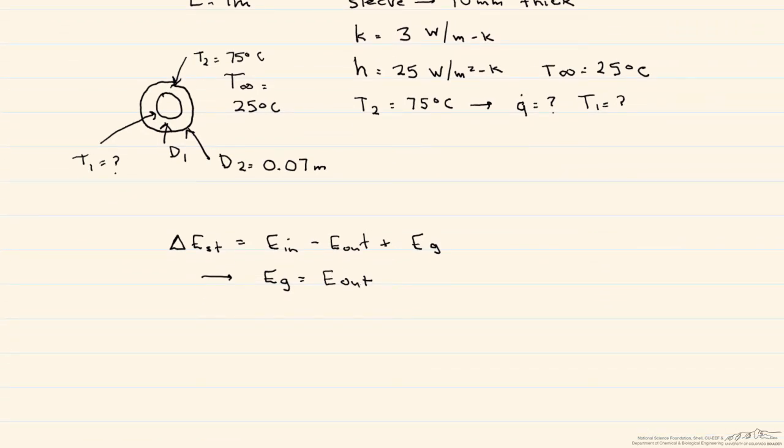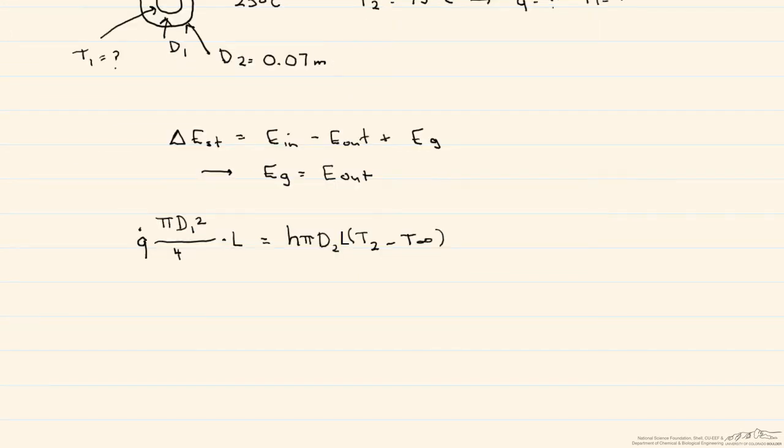And what's our generation? So our generation is equal to our Q-dot, which is that generation term. Remember it's a volumetric term, which means it's per volume, or per meters cubed. So we have to multiply it by the volume. So that's our generation, and this equals our E out, which is our convective term. So that's H times pi D2 times the length times T2 minus T infinity. And so what we can do is use this expression to solve for our volumetric generation, which is equal to 1.4 times 10 to the fifth watts per meter cubed.